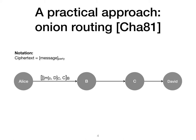Bob decrypts just the outermost layer of the onion, or peels the outermost layer of the onion. This reveals an inner onion, also known as the processed onion in blue, and the destination of the processed onion, Charlie. Charlie repeats this process. He peels the outermost layer of the onion, revealing the processed onion in pink, and the next destination for the onion, David. When David peels the processed onion, he obtains a message from Alice.